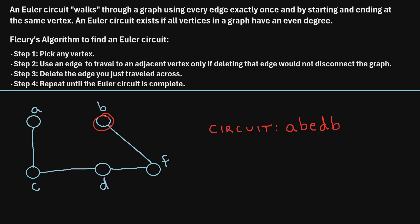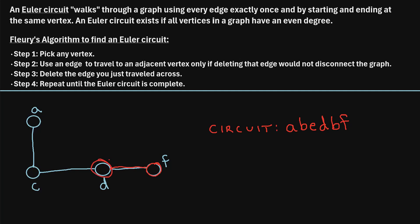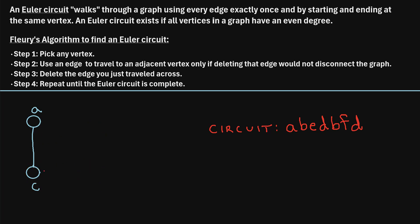Once we're at vertex B, there's only one choice: we have to travel to vertex F. If we delete this edge, we still have a connected graph, so it's okay to travel to vertex F. We'll add F as the next vertex in our circuit. From vertex F, there's only one vertex to travel to: vertex D. If we delete this edge, we still have a connected graph. So we'll add vertex D as the next vertex in our Euler circuit.